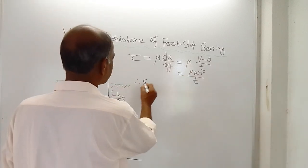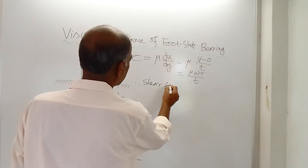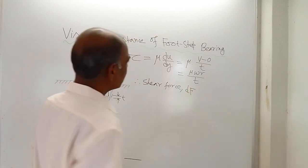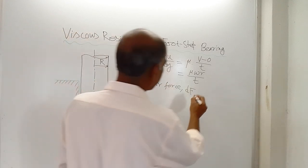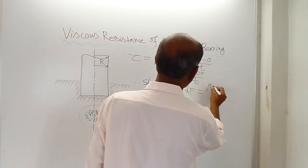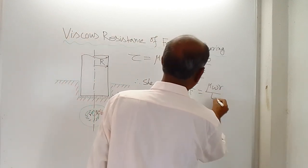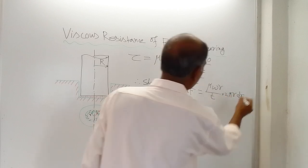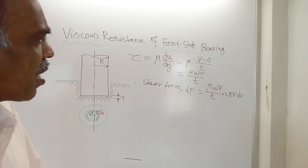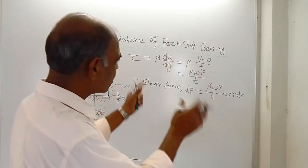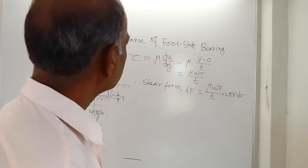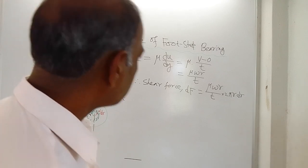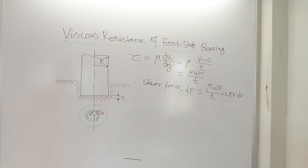Then what is shear force? Shear force denoted by df, that is equal to this multiplied by the area. So that is μ ω r / t, and area is 2π r × dr. That is the area, 2π r × dr. So this is shear force.